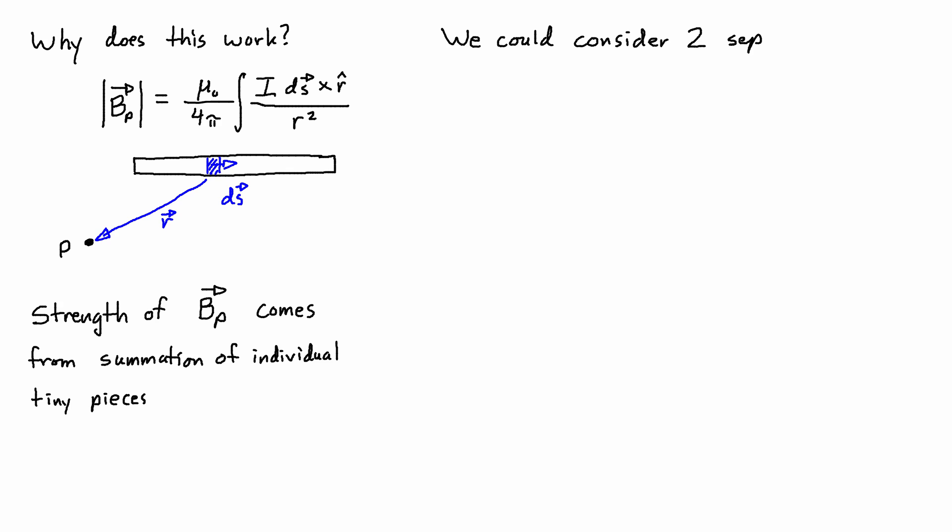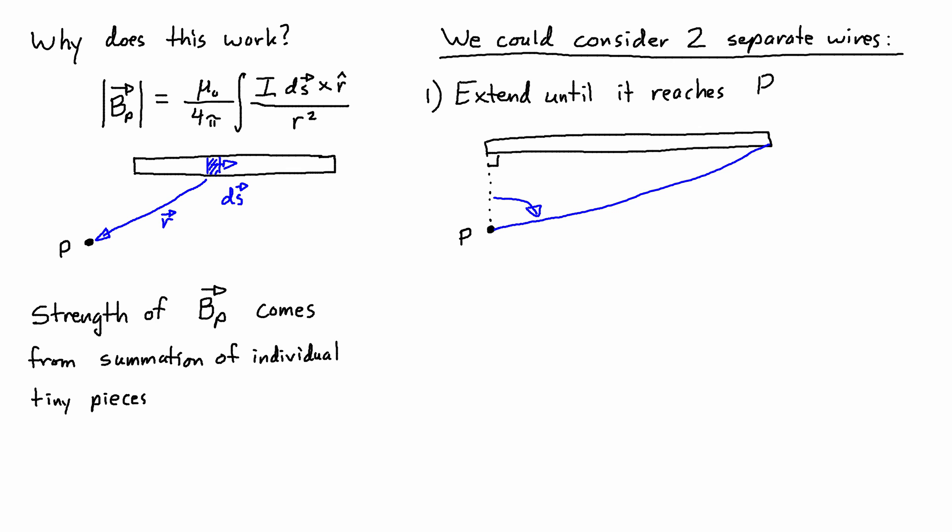Another way to look at this is to consider two separate wires. For the first one, we just extend the wire until it reaches that point that's the shortest point or the closest point to P. And then if we do that, we would have two different angles again. Theta 2 would be this angle in here, so that would be again approximately 80 degrees. Theta 1 would actually be 0 in this case.